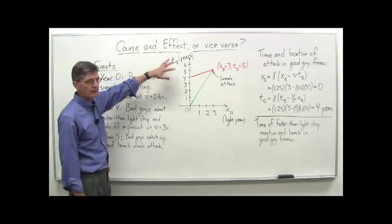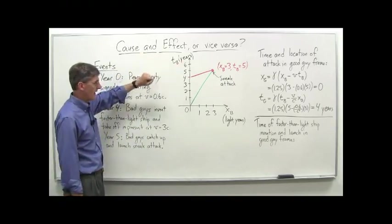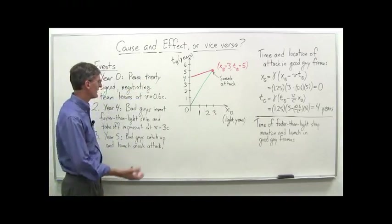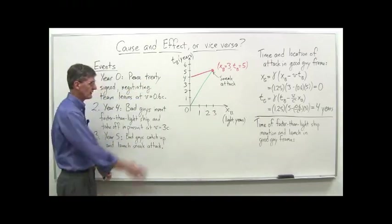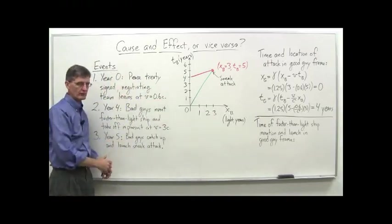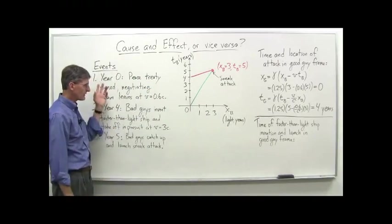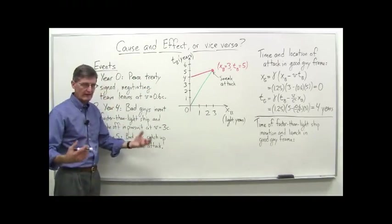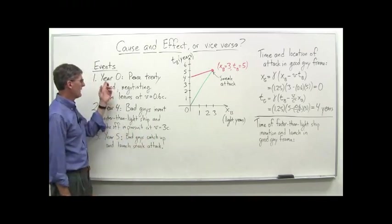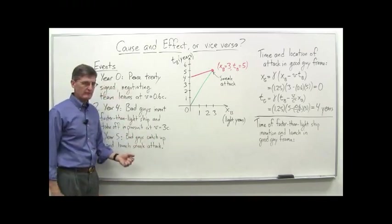And so the theme is cause and effect, or vice versa, and so it gives the ending away just slightly, but let's set up the situation here. We've got a diagram, but here are the events that we're going to imagine occurring. We've got the good guys and the bad guys, and they don't like each other very much, but at a certain point they sign a peace treaty.